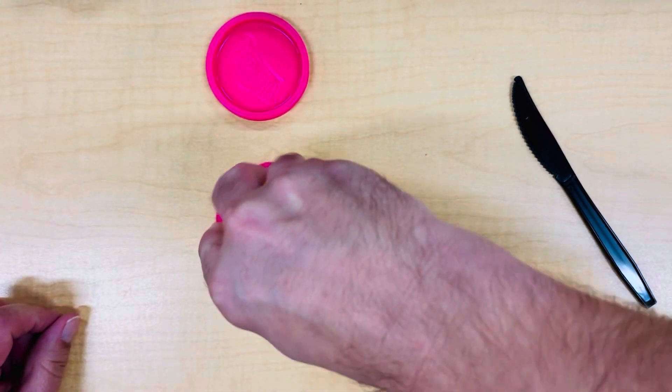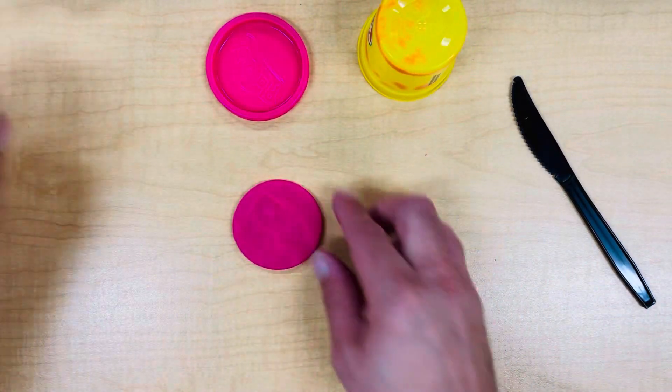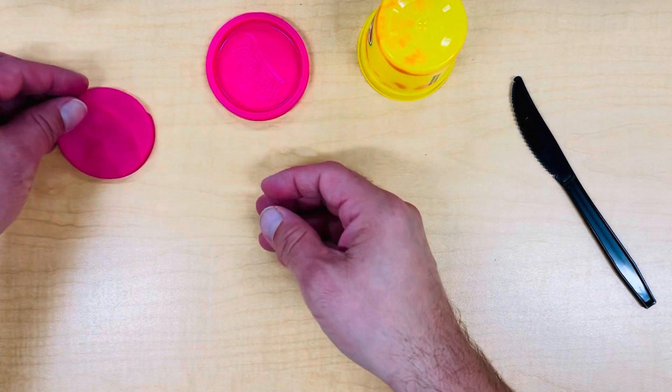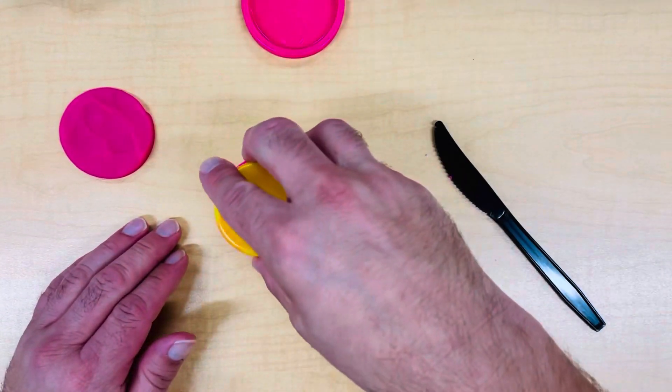Simply press your can down into the Play-Doh, give it a little twist, and lift up the can. That made a circle. Do this a couple more times so that you have three circles.